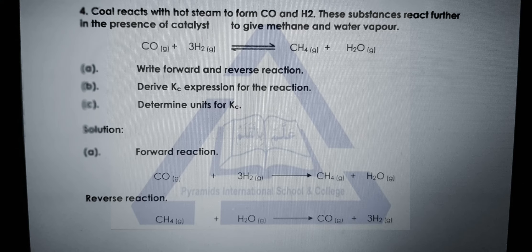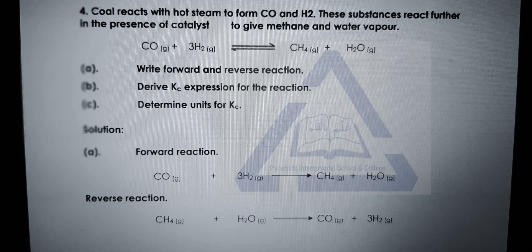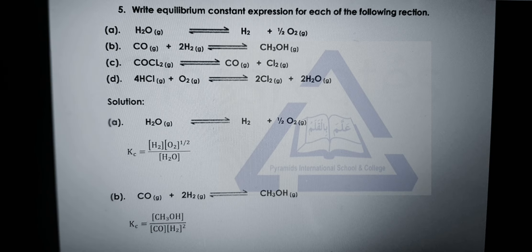Moving on to question four: coal reacts with hot steam to form carbon monoxide and hydrogen, and these substances react further in the presence of a catalyst to give methane and water vapour. You have to write forward and reverse reactions, derive the equilibrium constant expression, and determine units for the equilibrium constant using the same method as described. Solve it by yourself neatly on your registers.